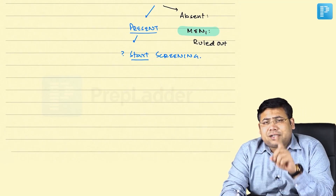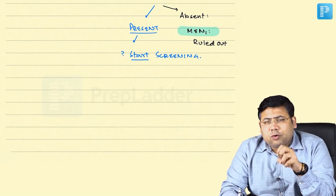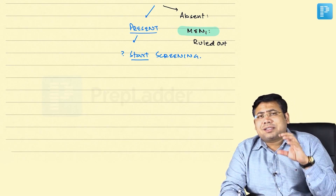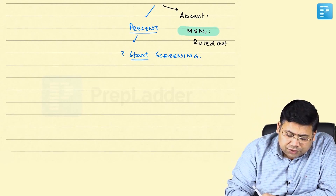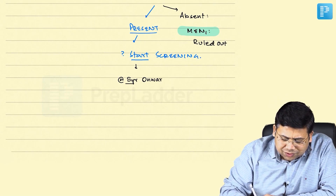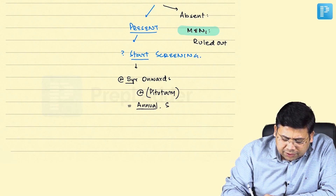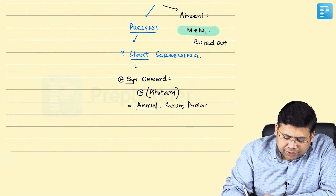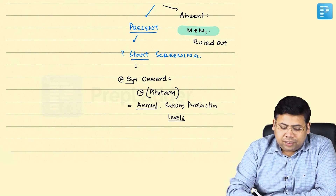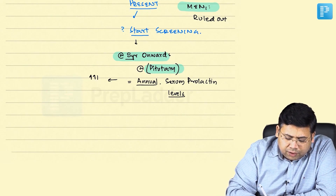Even though biochemically the first defect is seen at the level of the parathyroids, the structural defect may start early in the pituitary. Prolactinoma is the earliest manifestation, but since it is often asymptomatic, we may not know. So screening of the pituitary starts at five years onwards by measuring annual serum prolactin levels. If prolactin is found to be elevated, you proceed to MRI brain to localize the lesion.